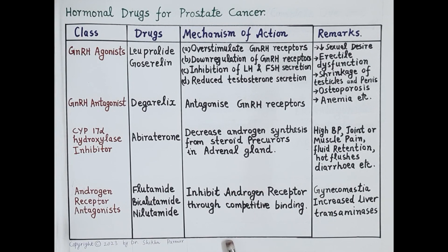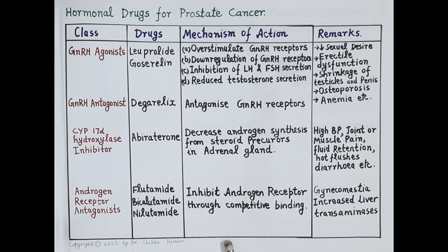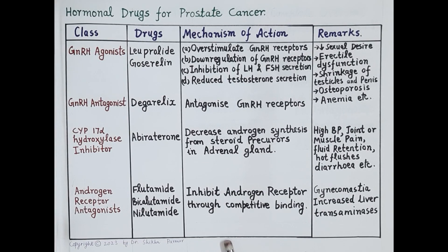Hormonal therapy for prostate cancer either reduces the level of testosterone or blocks androgen receptors, inhibiting proliferation of the prostate gland. This is how these drugs are used in prostate cancer treatment.